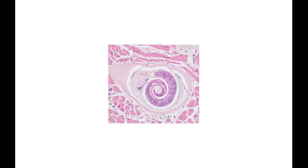Here is a cross-section of muscle tissue, and inside you can see the Trichinella species — in particular, the larvae in this photo.